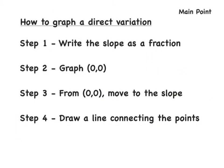So now we're going to figure out how to graph a direct variation. This is a main point, so please pause the video and write this down. Step 1: write the slope as a fraction. Remember, if we are given a slope of 5, how do we write 5 as a fraction? Always write any whole number as that number over 1 — so 5 over 1.